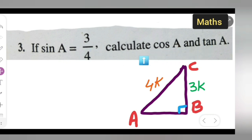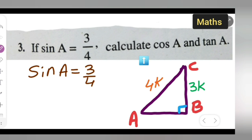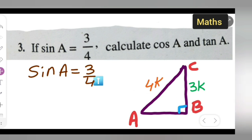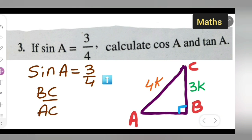What we know is that sine A is equal to 3 upon 4. Sine A means opposite upon hypotenuse. Now opposite of A is BC, so the opposite side is 3. This is BC upon AC, where AC is your hypotenuse. So this will be equal to 3 upon 4.